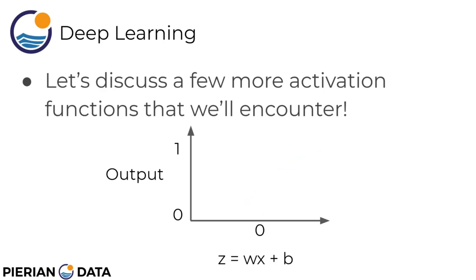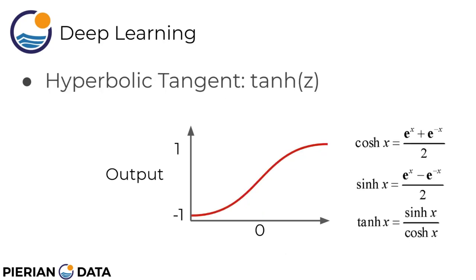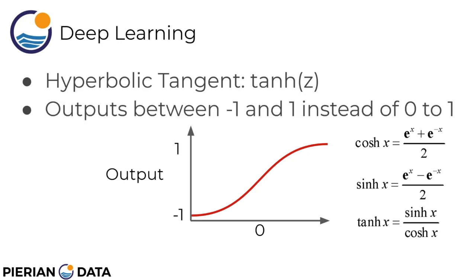Let's discuss a few more activation functions that we're going to encounter. Some really common ones are things like the hyperbolic tangent, written out as tanh. The most common one is hyperbolic tangent, which is hyperbolic sine divided by hyperbolic cosine. What's nice about this is it's going to output between negative 1 and 1 instead of 0 to 1. It looks really similar to sigmoid function; essentially the main difference is that lower bound. We'll discuss why later on with certain neurons and certain networks it makes more sense to use a hyperbolic tangent. I just want you to be aware that it's a really common option.